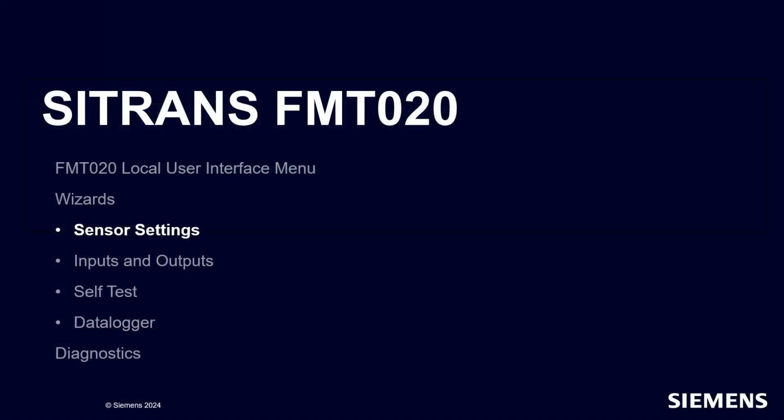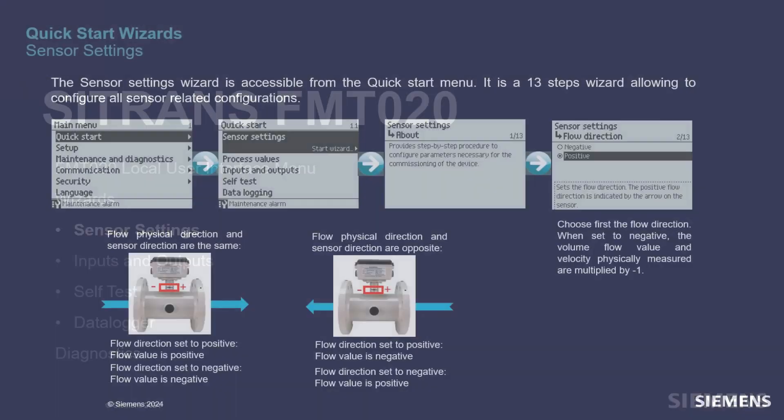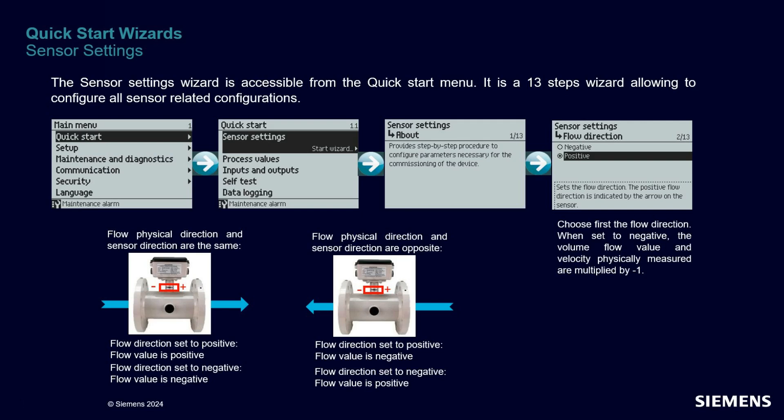Let's start with the wizards of the sensor settings. The FMT-020 has numerous parameters for all of its features, and the team designed many wizards to make commissioning simple and easy. This sensor settings wizard is composed of 13 steps covering all aspects of the sensor parameters. It starts with defining the flow direction for which the product will report positive flow values.